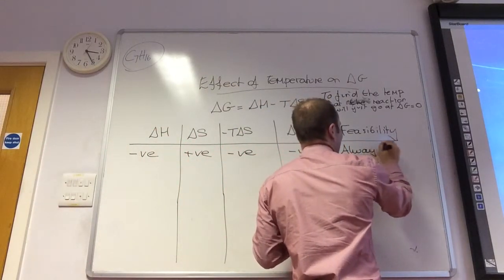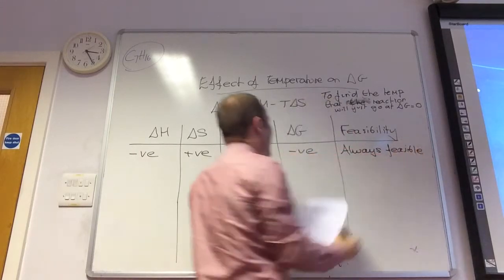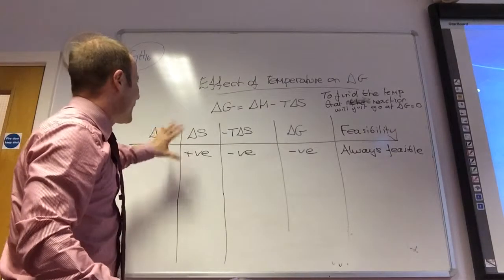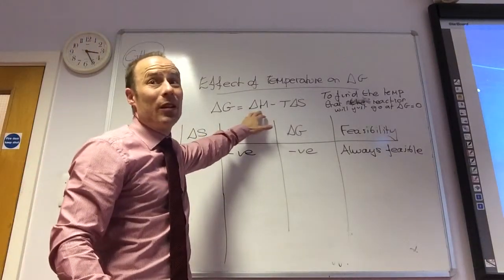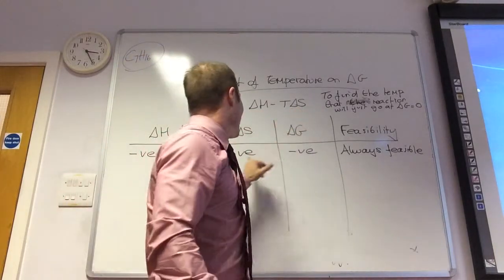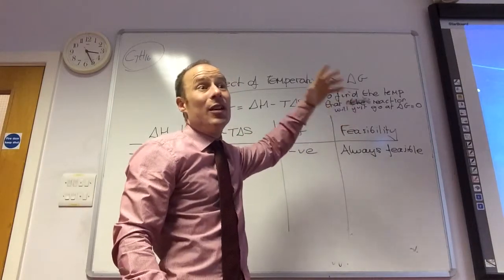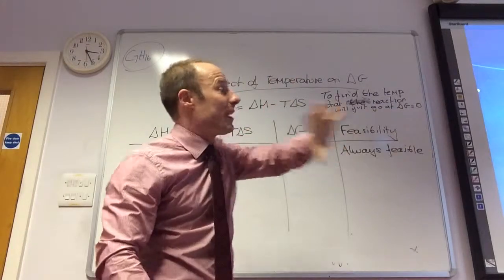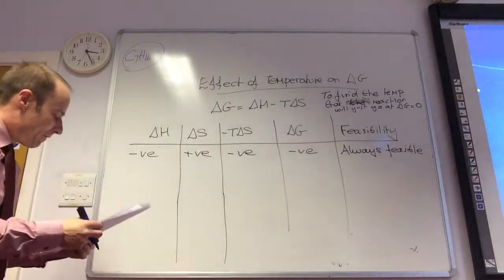That is like the golden reaction, and it makes sense to us: if delta H is negative, it means it's exothermic, so the surroundings are gaining entropy. If delta S is positive, it means the entropy of the reaction is increasing. So I'm increasing the entropy of the reaction and the entropy of the surroundings — it's got to be feasible. That's the first case.